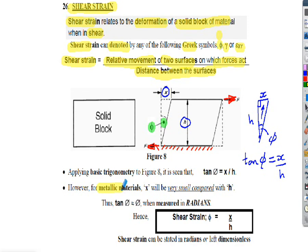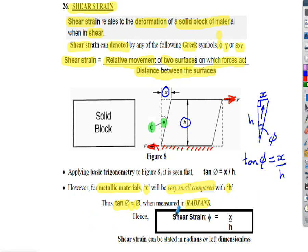However, when we're dealing with metallic materials — the main materials used in these calculations — the X value is very, very small compared to height H. So when we're using radians, you'll find that tan of angle phi is almost equal to the angle phi itself. For example, if you type tan(0.001) on your calculator, you'll get 0.001. So in most cases, when we deal with metallic materials, we ignore the tangent function and simply define shear strain phi as X divided by H. Shear strain can be stated in radians or left dimensionless.